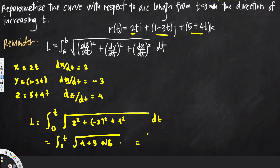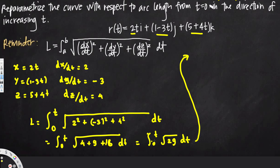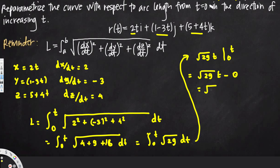So the integral becomes the integration from 0 to t of √29 dt. Evaluating this, we get √29 · t evaluated from 0 to t. Plugging in t gives √29 · t, and plugging in 0 gives 0. So the arc length is L = √29 · t.